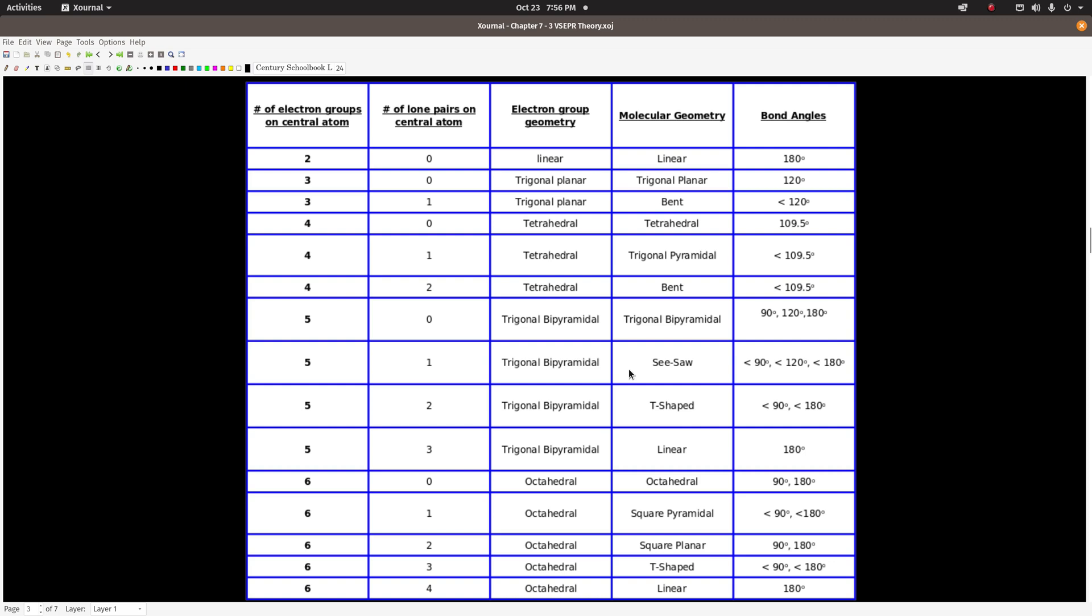This is how you apply VSEPR theory to answer the kind of questions that you'll be asked to answer. And that is usually: what is either the molecular geometry or the bond angles in a molecule, maybe the electron group geometry, but mostly the molecular geometry and bond angles.